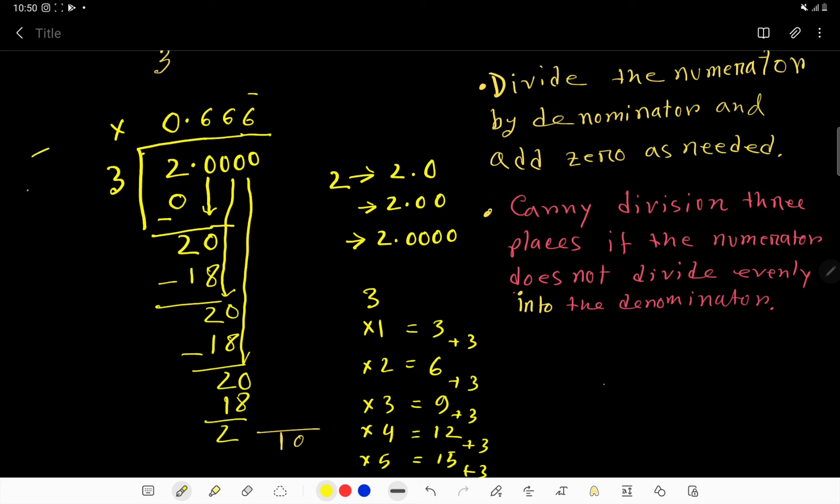Remember, non-terminating and recurring decimal. So here, this trick will help you: carry the division three places if the numerator does not divide evenly into the denominator. So here are the 3 places.